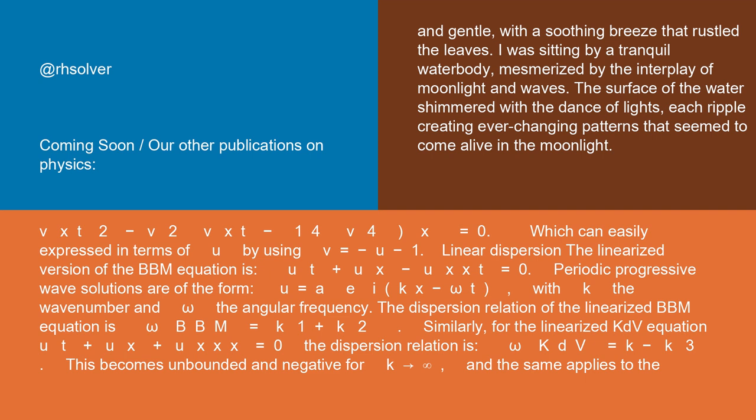Linear dispersion: the linearized version of the BBM equation is u_t + u_x - u_xxt = 0. Periodic progressive wave solutions are of the form u = A*e^(i(kx - ωt)).